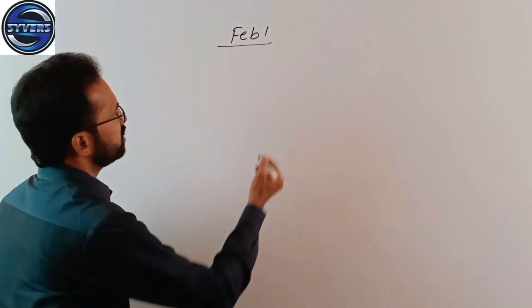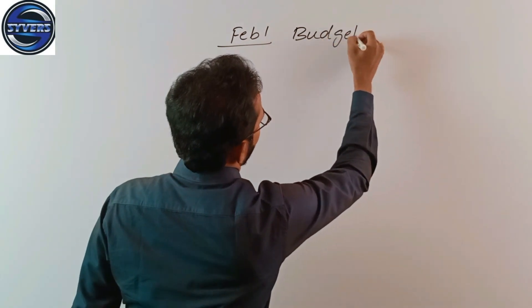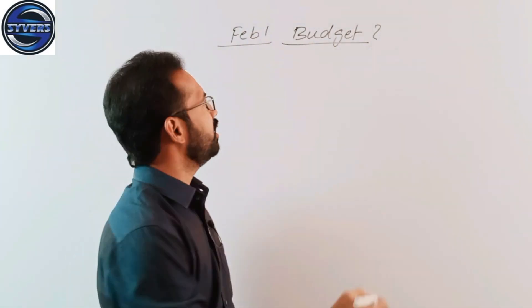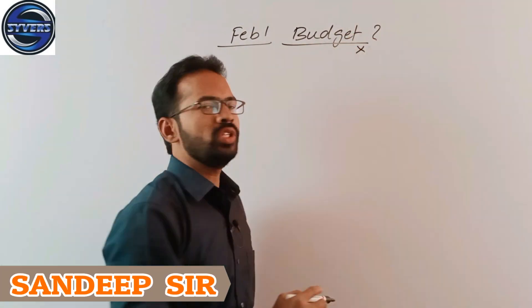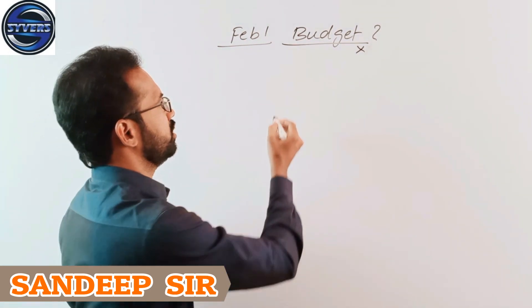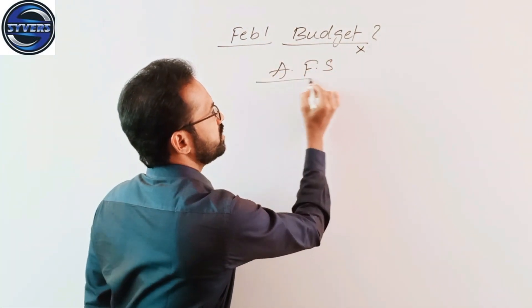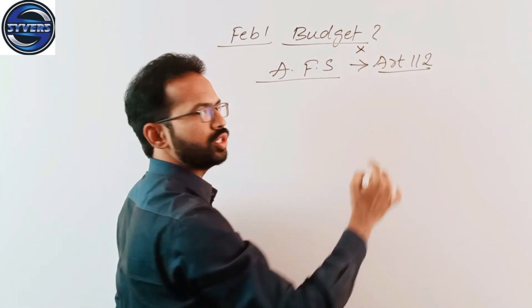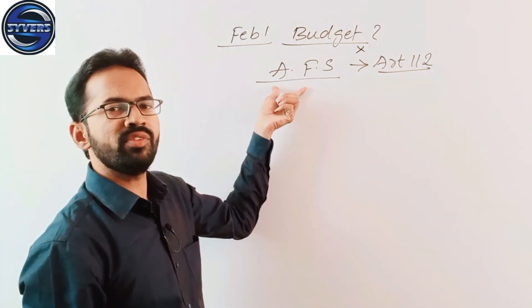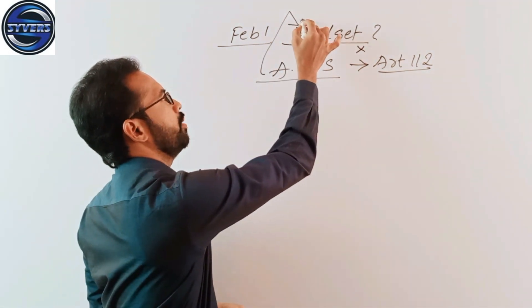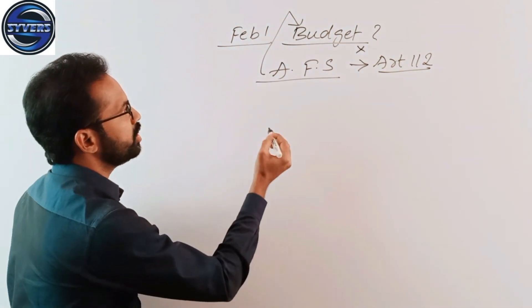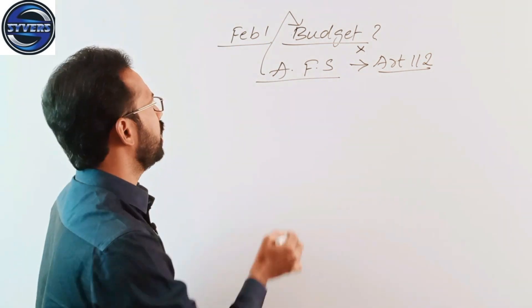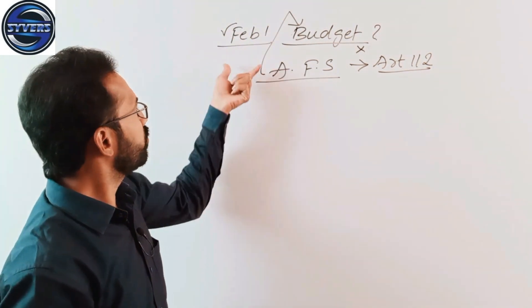So we shall start here. The first question is, in our constitution, is budget referred to as budget? No. It is referred to as Annual Financial Statement as per Article 112 of Indian Constitution. So they are referring it as budget when this budget is going to be presented in the parliament.